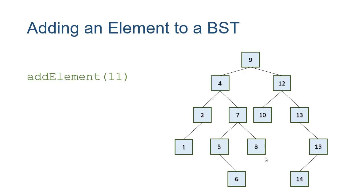Suppose we have this binary search tree and we're going to add element 11. First we start at the root: 11 is greater than 9, so we're going to add it to the right subtree. 11 is less than 12, so we're going to add it to the left subtree. It's greater than 10, so we're going to add it to the right subtree. Notice there is no right subtree there, so 11 becomes the root of the right subtree of the node containing 10.